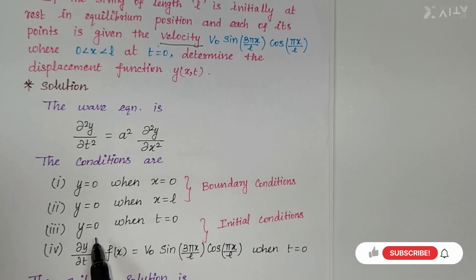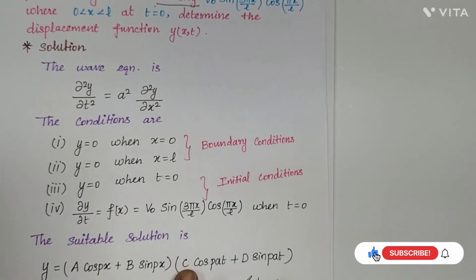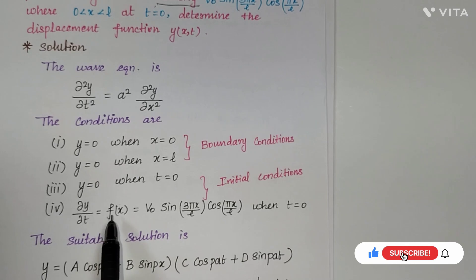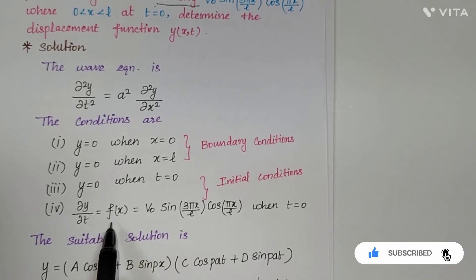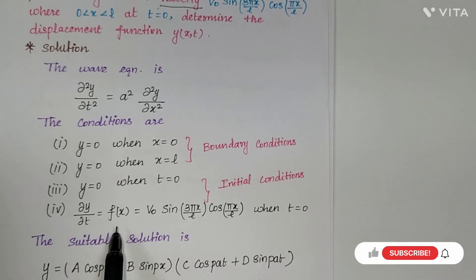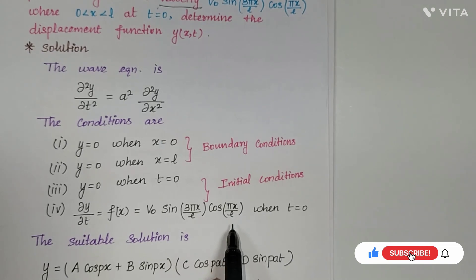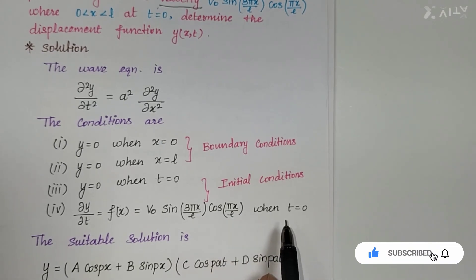The third condition is y = 0 at t = 0, because here the given initial condition is non-zero velocity, so the third condition is the displacement condition. The fourth condition is the velocity condition: ∂y/∂t = f(x), where f(x) = v0·sin(3πx/L)·cos(πx/L) at t = 0.